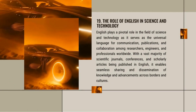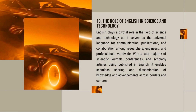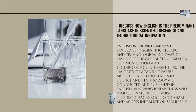English plays a pivotal role in science and technology as the universal language for communication, publications, and collaboration among researchers, engineers, and professionals worldwide. With the vast majority of scientific journals, conferences, and scholarly articles published in English, it enables seamless sharing and dissemination of knowledge across borders. The majority of academic papers and conferences in science and technology are conducted in English, allowing researchers from diverse linguistic backgrounds to share information seamlessly.